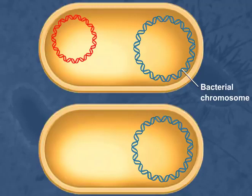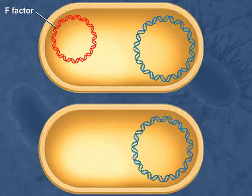A small DNA circle or plasmid called the F-factor is required for conjugation. The F-factor stands for fertility factor. Strains of bacteria containing the F-factor are called F-plus, and those without it are called F-minus.